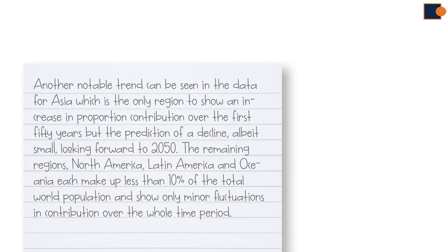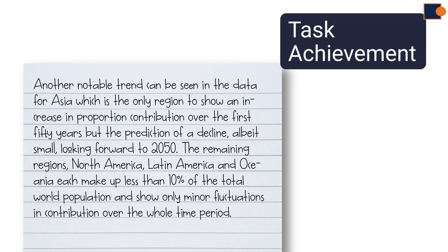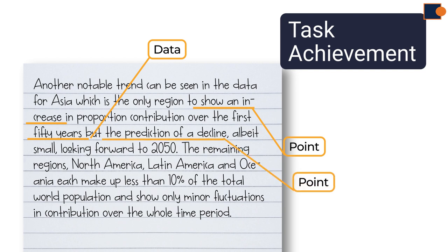Let us continue to look at next paragraph about details. So, let us assess task achievement here. First point is about Asia, and the point actually says show an increase, and support by studying over the first 50 years. And, again, point, the prediction of decline with another support, looking forward to 2050.